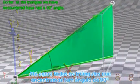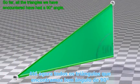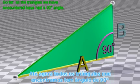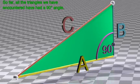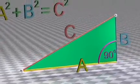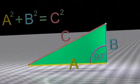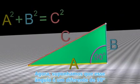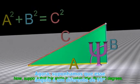So far, all the triangles we have encountered have had a 90 degree angle. Now, suppose that this angle is a value other than 90 degrees.